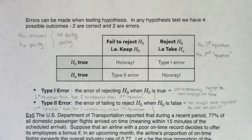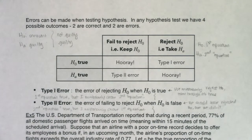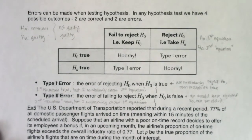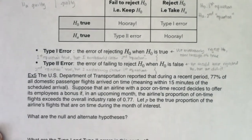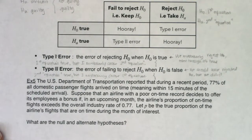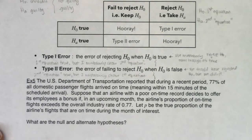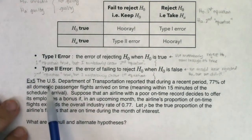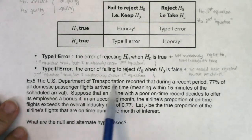We'll figure out our null and alternate, then see what the Type 1 and Type 2 errors are and what the real-world consequences are. I'll keep the table in view as long as I can. The US Department of Transportation reported that during a recent period, 77% of all domestic passenger flights arrived on time, meaning within 15 minutes of the scheduled arrival.